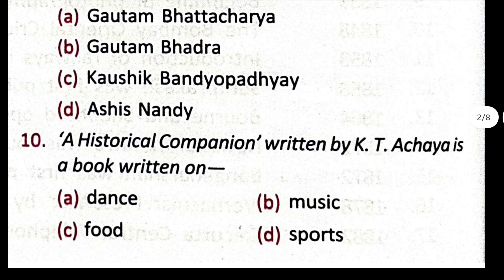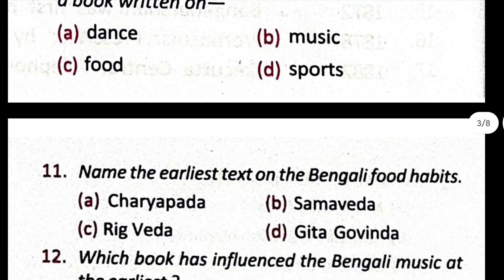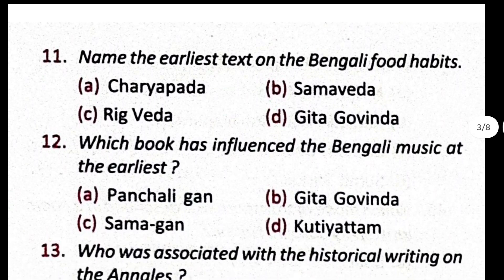Question number 10: 'A Historical Companion' written by KT Achaya is a book written on — option C is correct, food. Question number 11: name the earliest text on the Bengali food habit? Option A is correct, Charepada. Question number 12: which book has influenced Bengali music at the earliest? The correct option is B, Geet Govind.